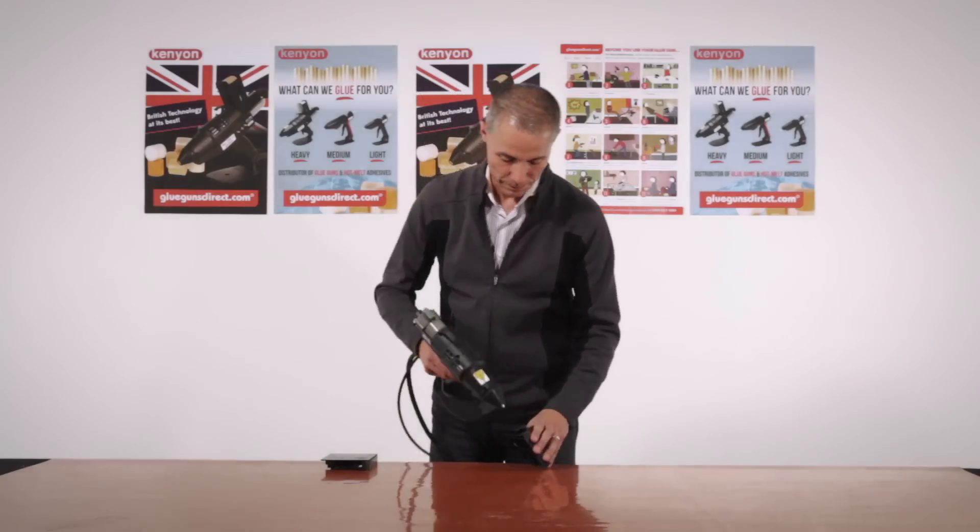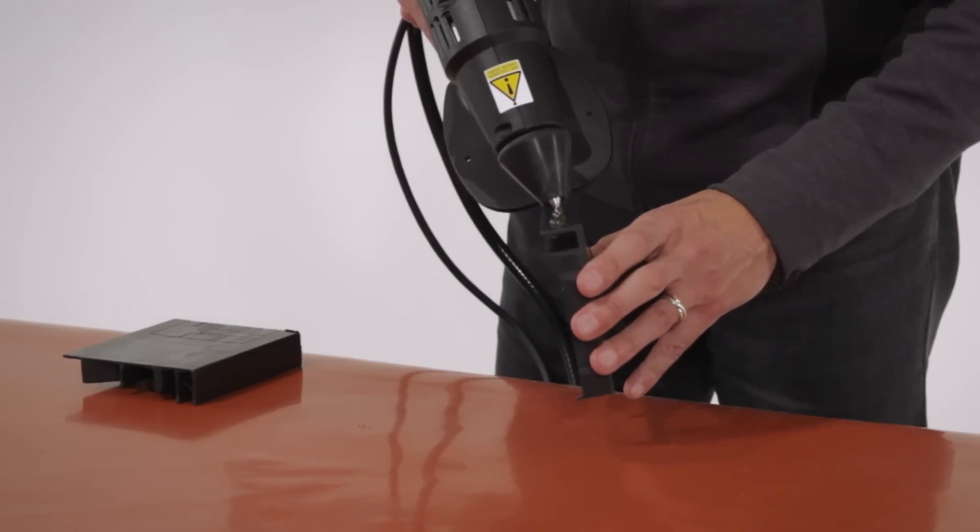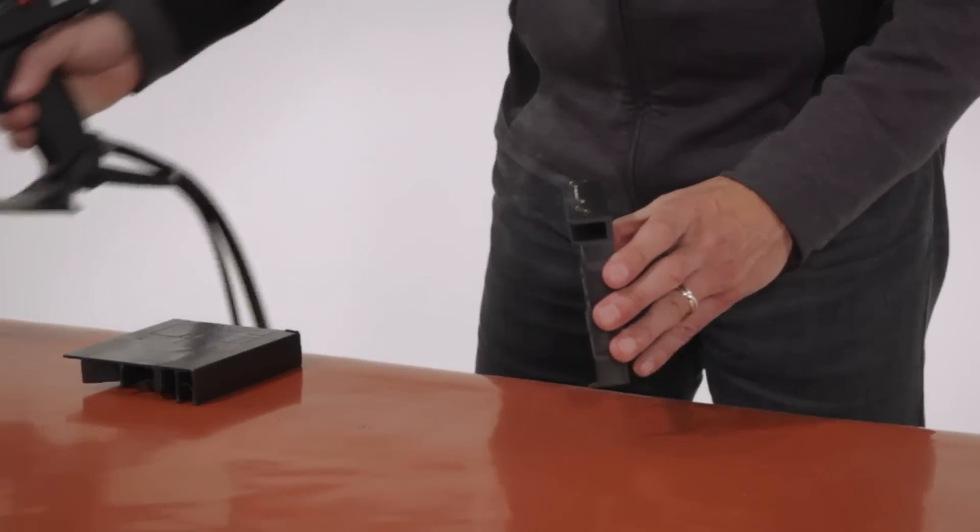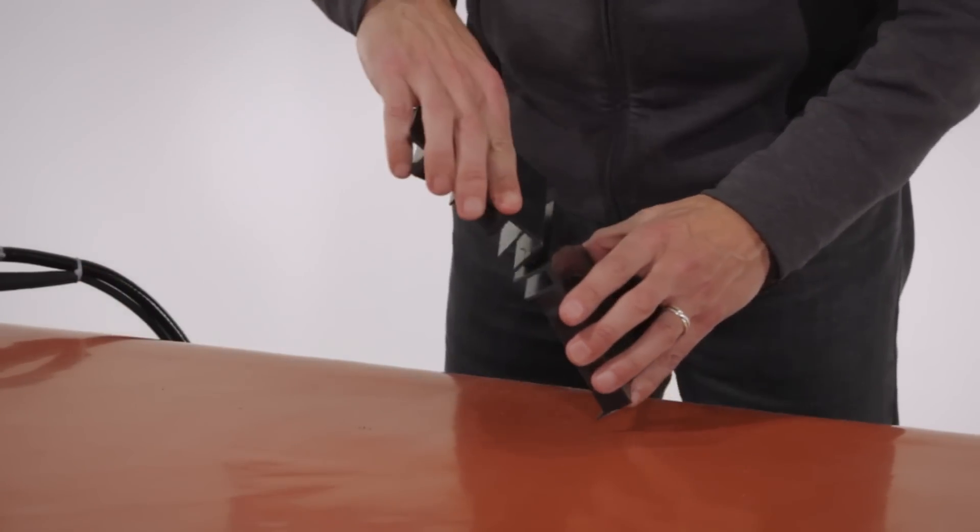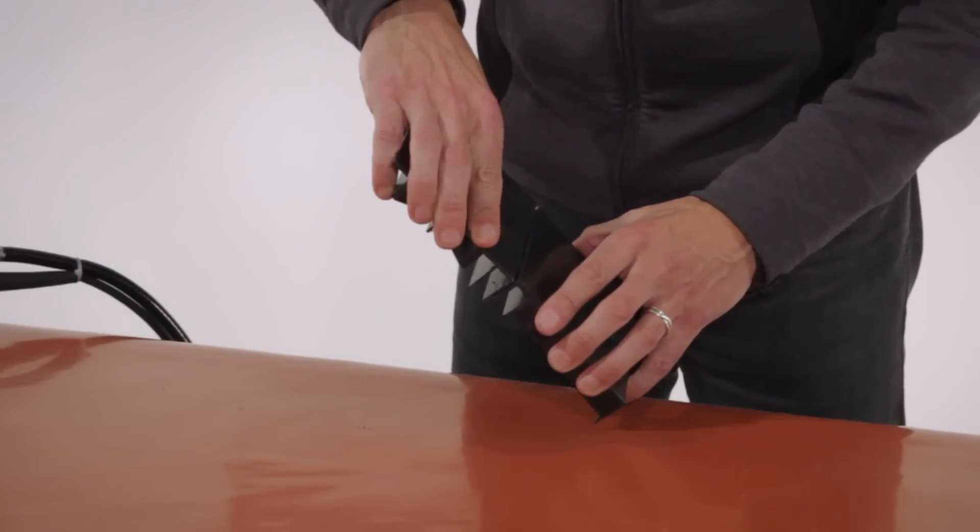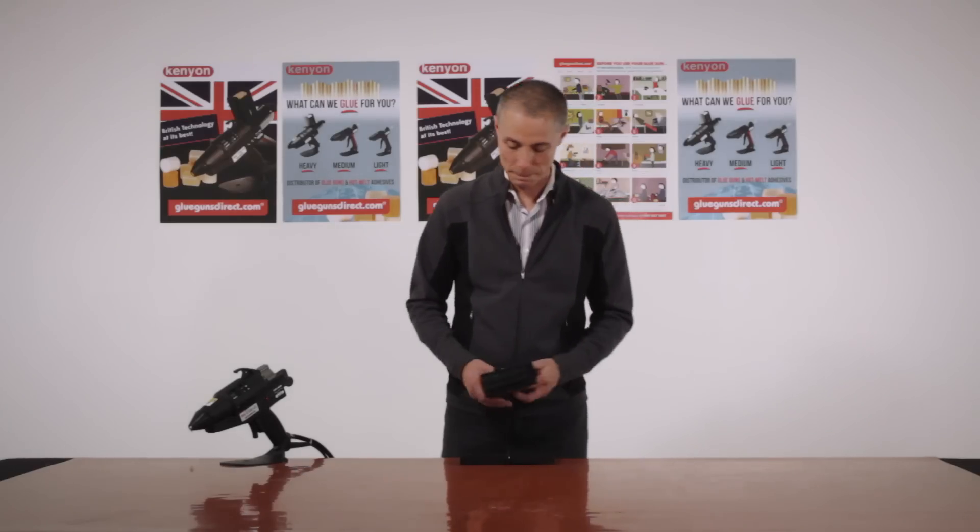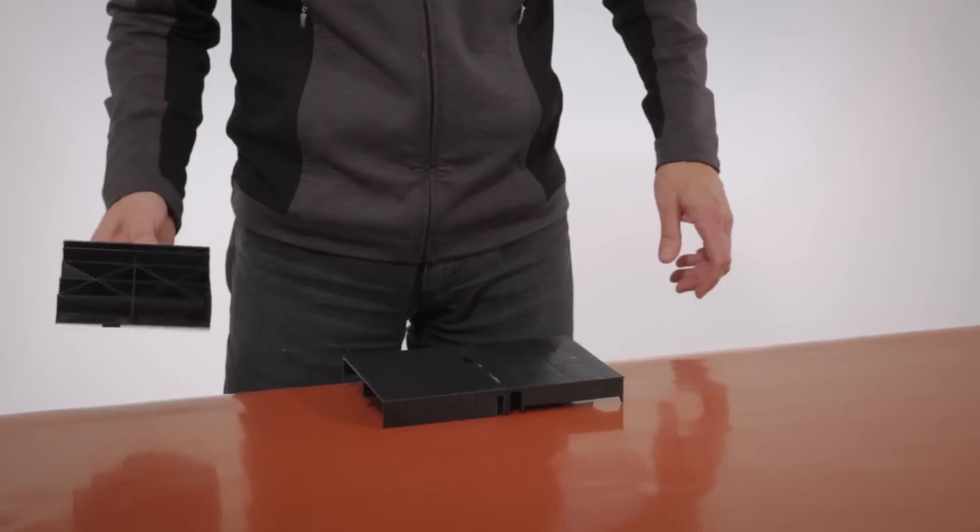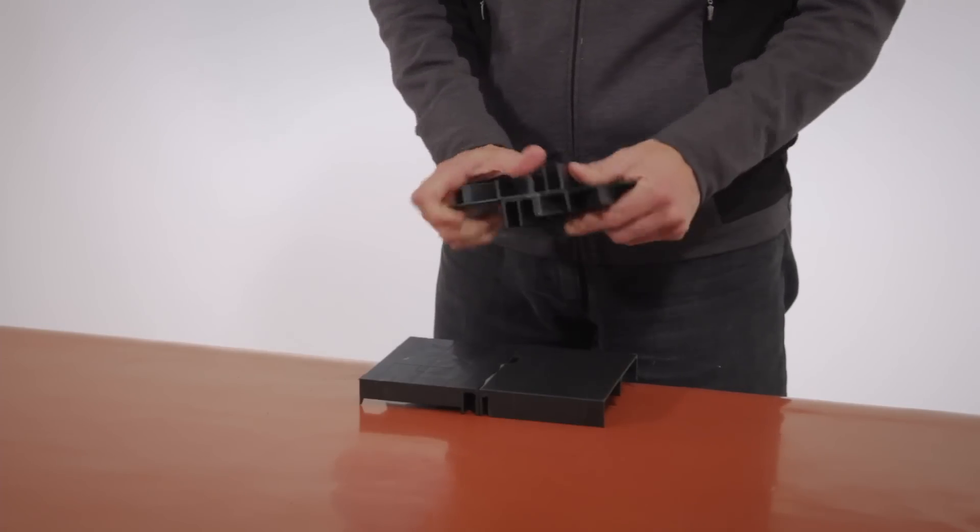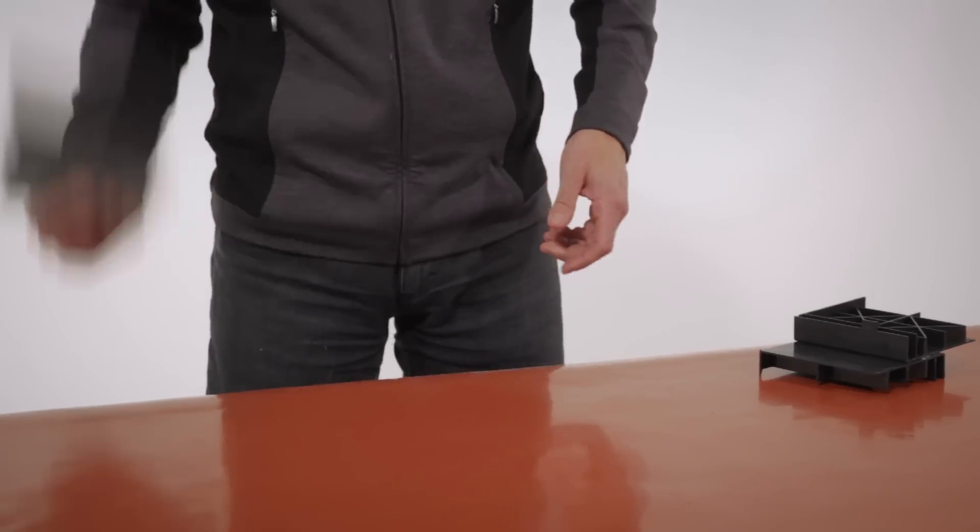Now let's try a butt joint using Tekbond 267. As you can see, both glues are able to bond the polypropylene without failing.